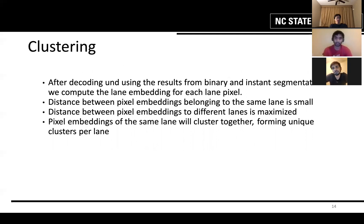Last is clustering. After decoding and using the result from binary and instance segmentation we compute the lane embedding for each lane pixel. We make sure that the distance between the pixel embedding belonging to the same lane is small. What I mean by that is if there are two pixels on a single lane the distance between them should be small and the distance between pixel embedding to different lanes is maximized.